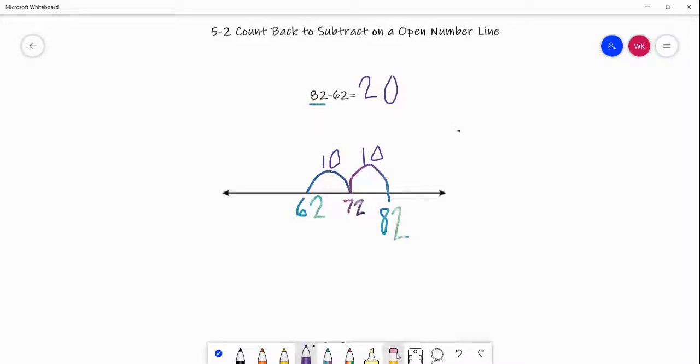So now I'm going to show you how you could do it with addition. You could start at 62. You're going to want to start with your lowest number.